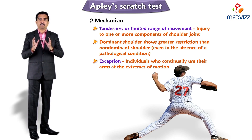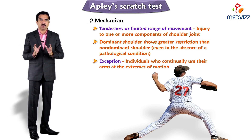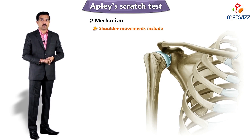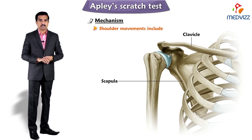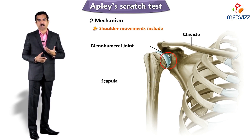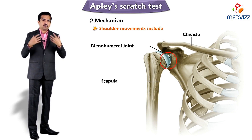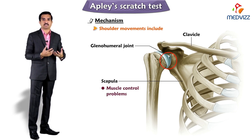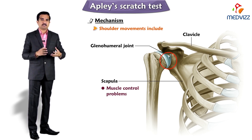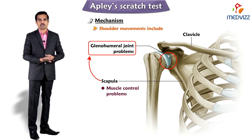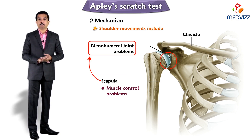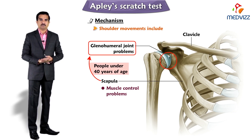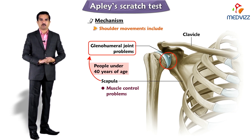However, the examiner must always be aware that shoulder movements include movements of the scapula and clavicle as well as the glenohumeral joint. Many glenohumeral joint problems are actually scapular muscle control problems, which may secondarily lead to glenohumeral joint problems, especially in people under 40 years of age. This is what we need to know about Apley's scratch test.